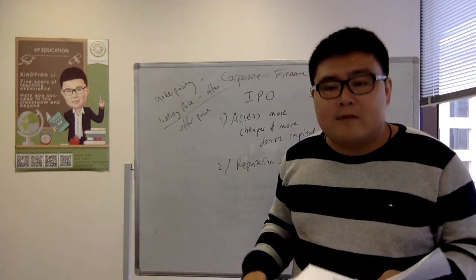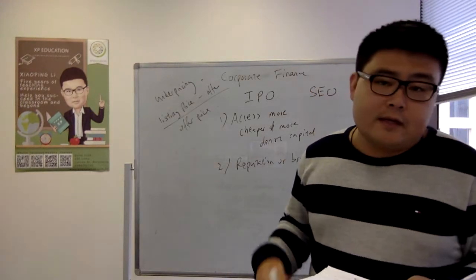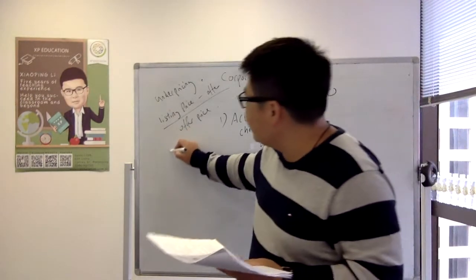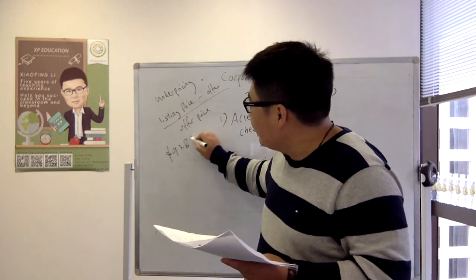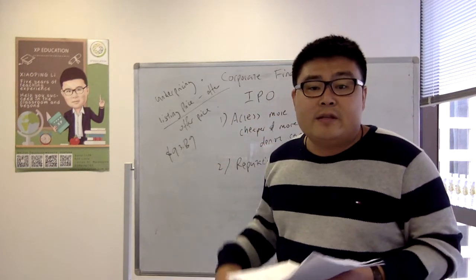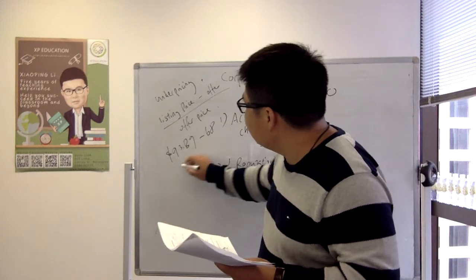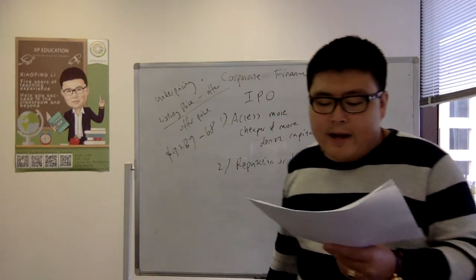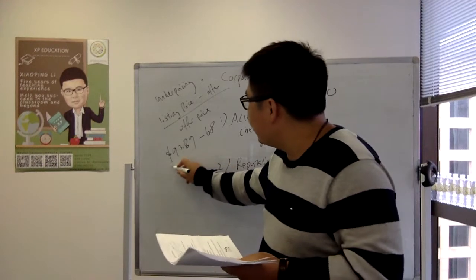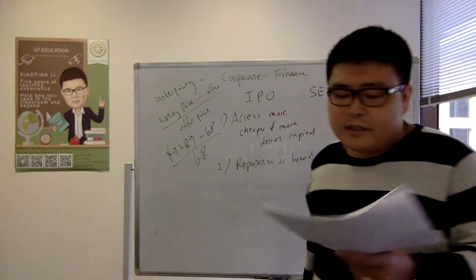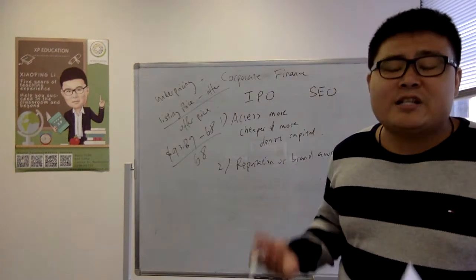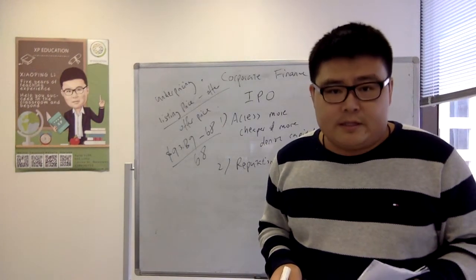So, in the example of Alibaba, we know that the close of trading price is gonna be equal to $93.89, and the subscription price is actually equal to $68. And then we say that $93.89, take away the $68 price, divided by $68, and that is gonna be given us in terms of the percentage of under pricing.